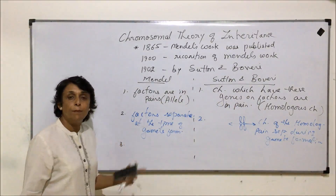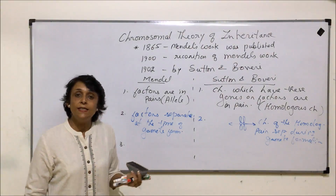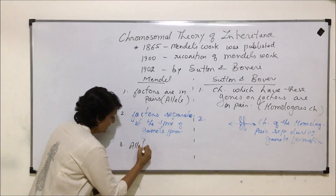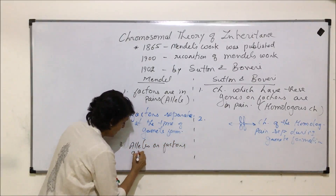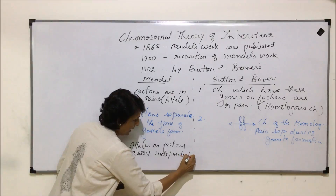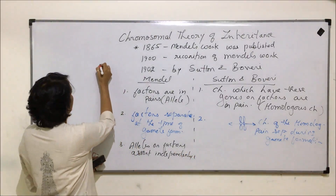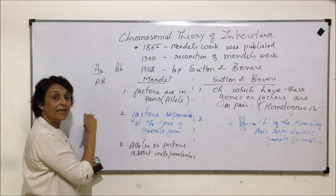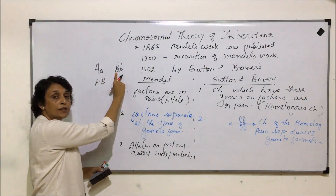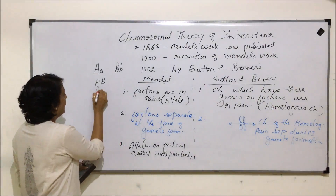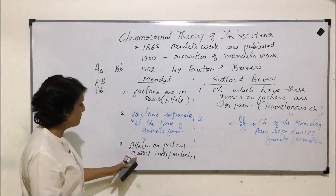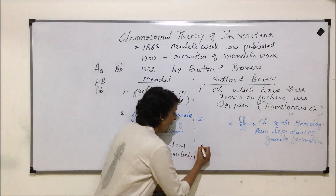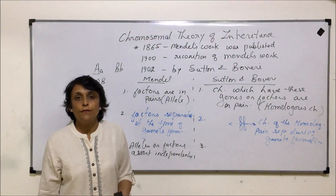The third point which Mendel said about these factors was that genes can independently assort themselves. For example, if there is gene A and a, and another gene B and b, then dominant A can go with dominant B, or this allele of one gene can assort itself with either of the two alleles of the other gene. And Sutton and Boveri said that chromosomes also assort themselves independently.